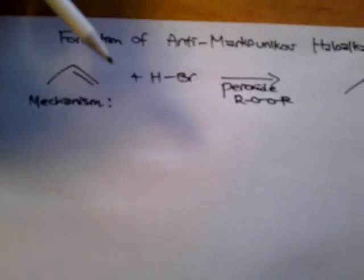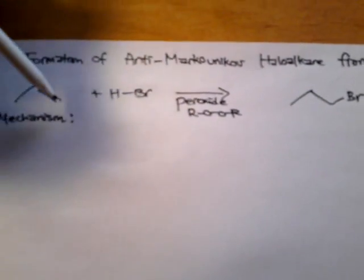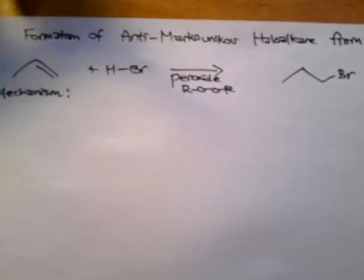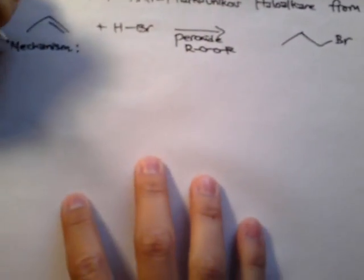For that reaction, we just use HBr. But when we're trying to add the bromine to the primary position, which is the anti-Markovnikov product, we have to use HBr in conjunction with peroxide. I'm just going to go through the mechanism right now.